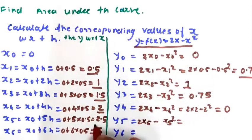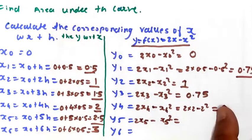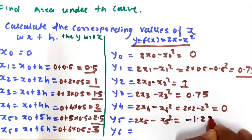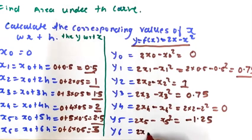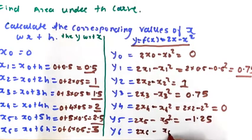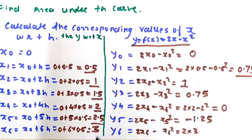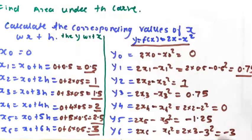For y5, substituting x5 = 2.5: y5 = 2×2.5 minus 2.5 squared = 5 minus 6.25 = minus 1.25. For y6, substituting x6 = 3: y6 = 2×3 minus 3 squared = 6 minus 9 = minus 3.